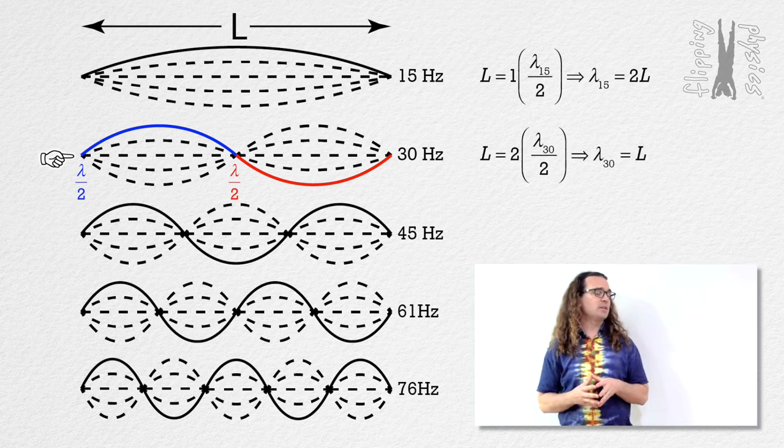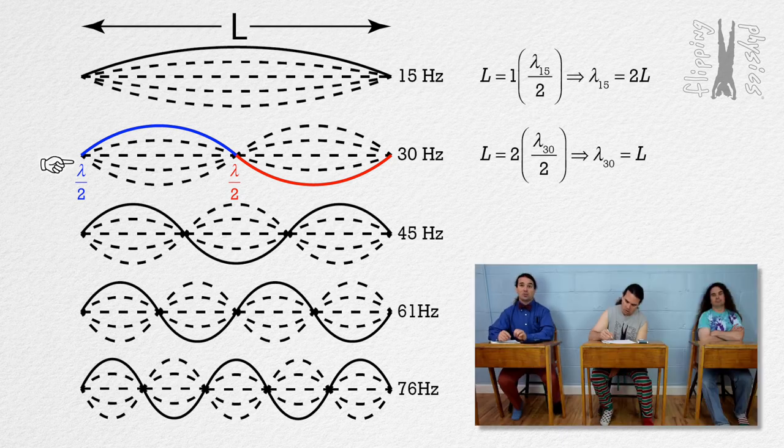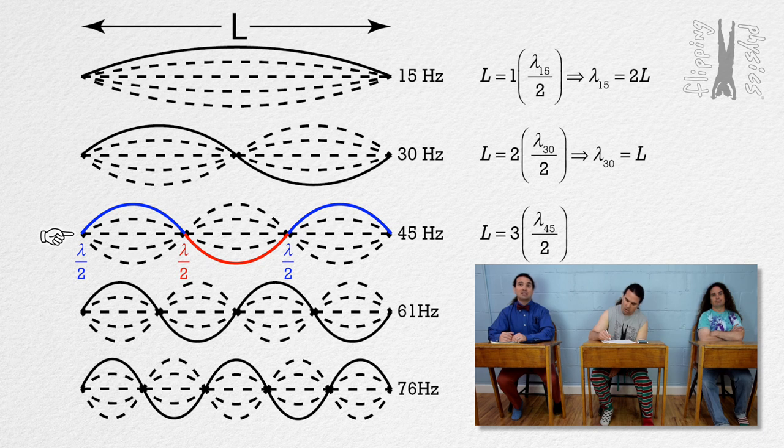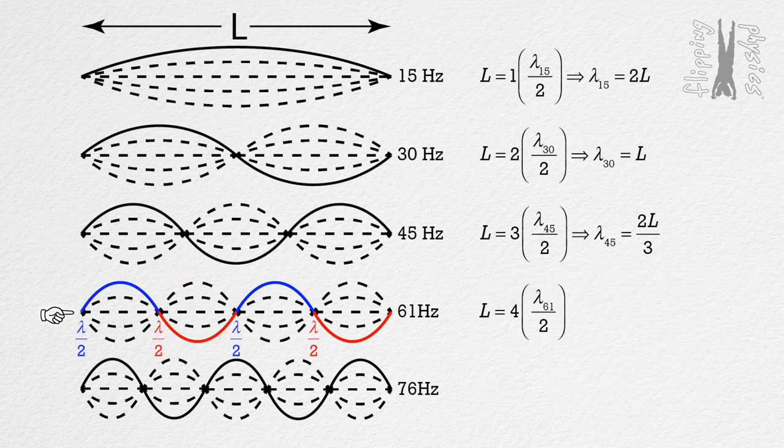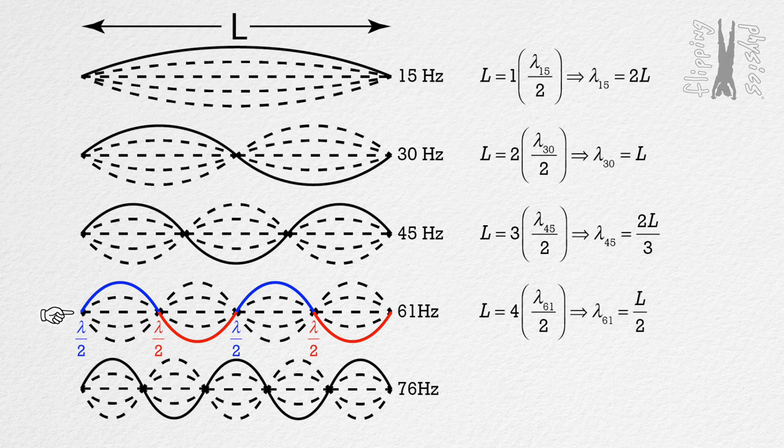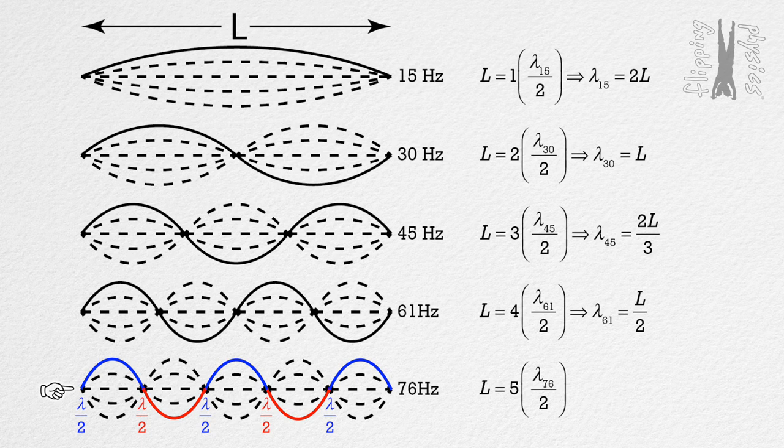Billy, could you please do the next three? Oh, yeah, yeah. So, the 45 hertz standing wave pattern has three half wavelengths which means the wavelength equals 2L over 3. The 61 hertz standing wave pattern has four half wavelengths, which means the wavelength equals L over 2. The 76 hertz standing wave pattern has five half wavelengths, which means the wavelength equals 2L over 5.